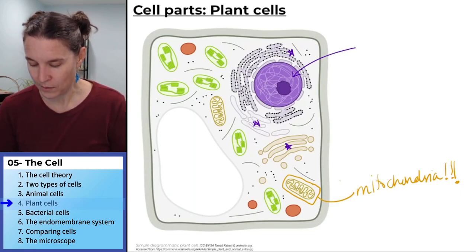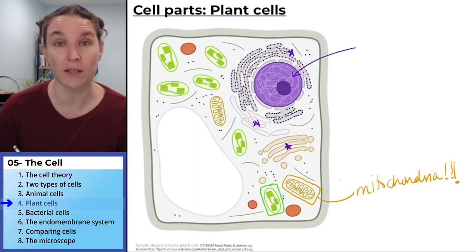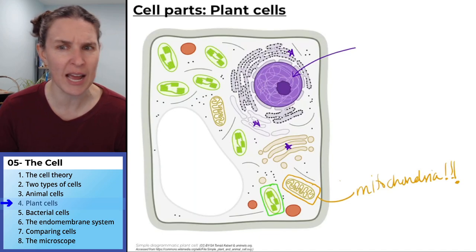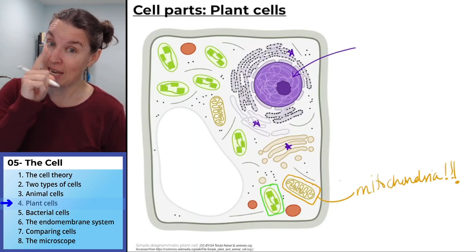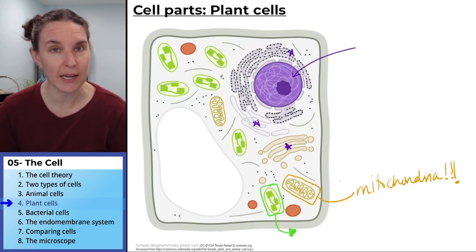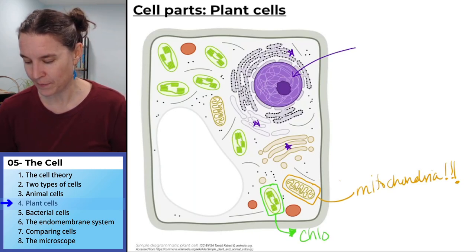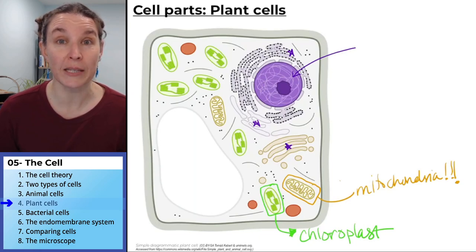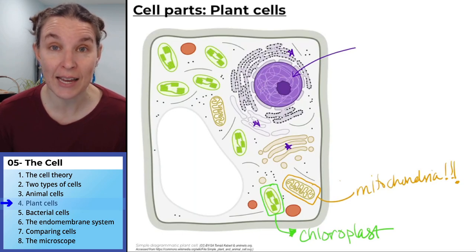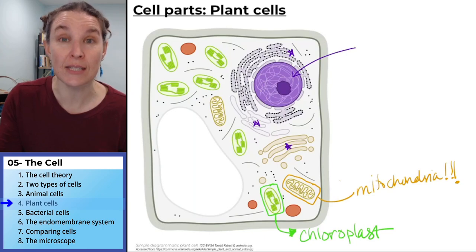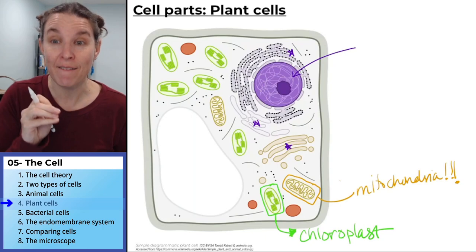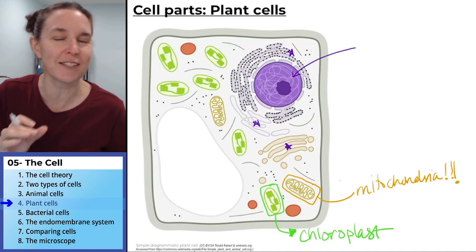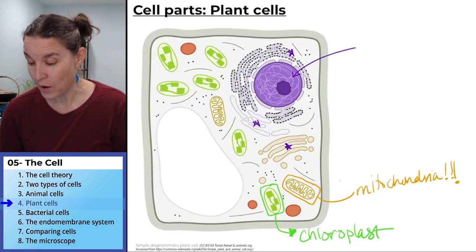Do you see something similar to the mitochondrion that looks different from what we saw in the animal cell? It's about the exact same size as a mitochondrion, except it has different-looking stuff on the inside. This is the chloroplast. Chloroplasts are only found in plants and plant-like protists — some single-celled eukaryotes that have chloroplasts inside them. Chloroplasts are where photosynthesis takes place.